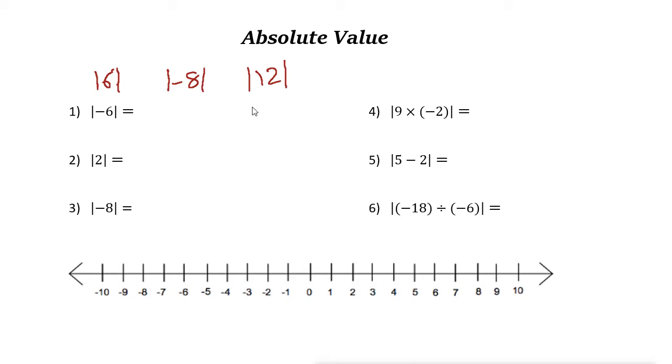Absolute value means the distance of the number from zero on the number line. So here for example we have negative six. Negative six is here. The distance from negative six to zero is just six units, so the absolute value of negative six is just six.